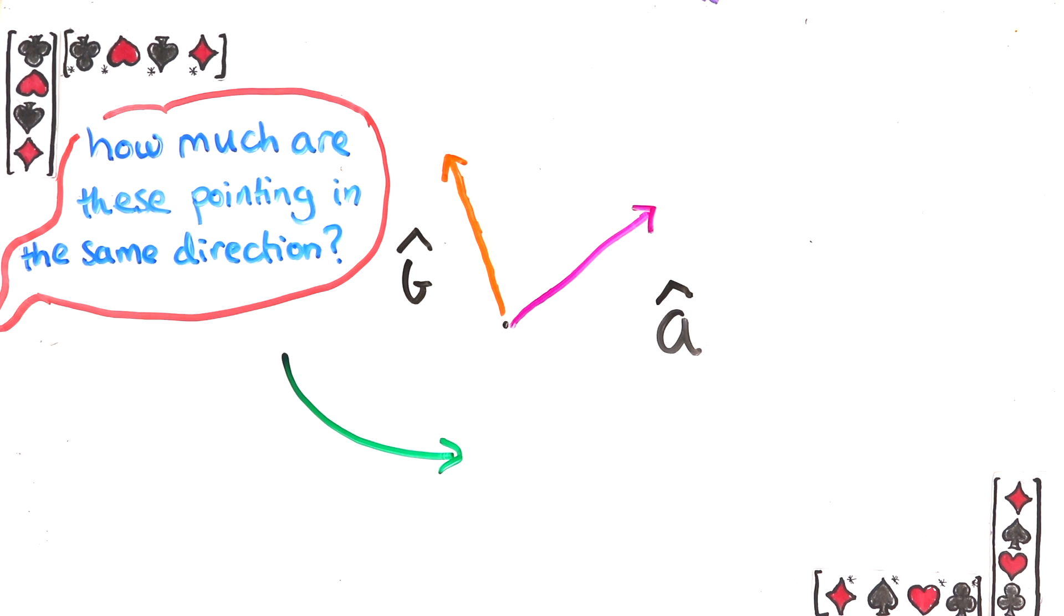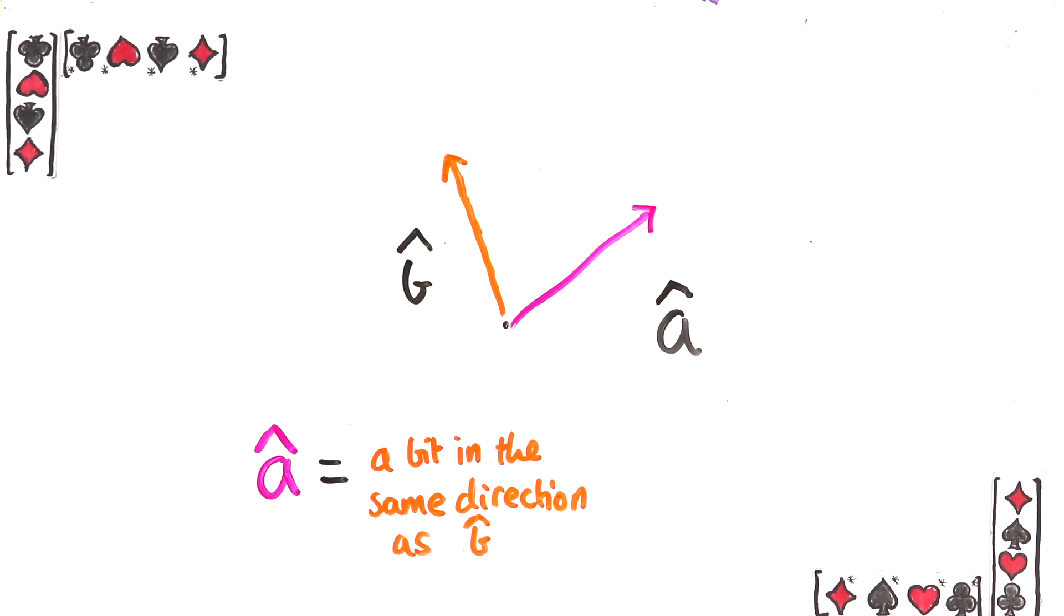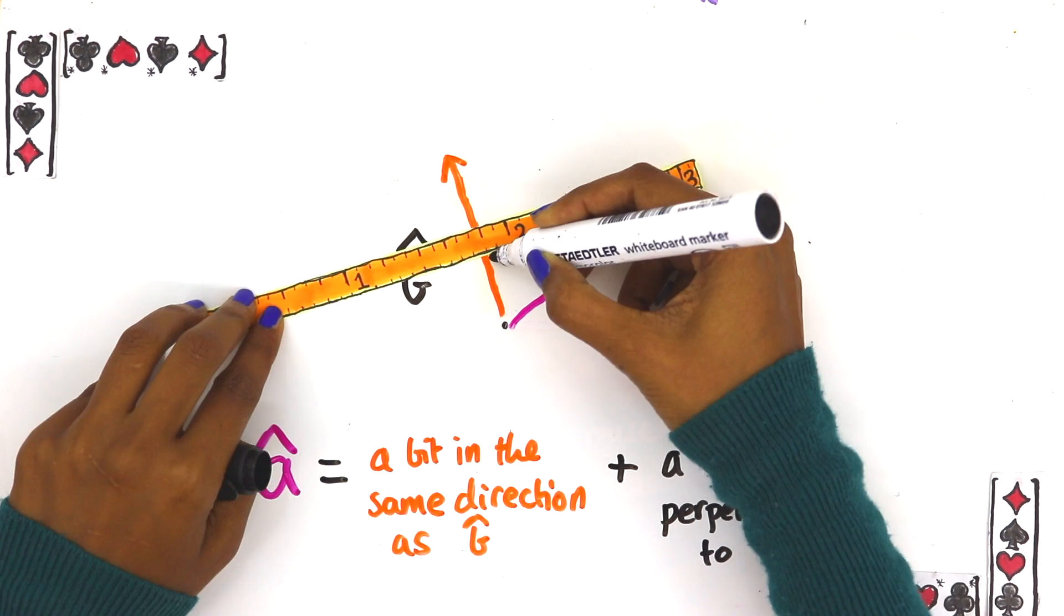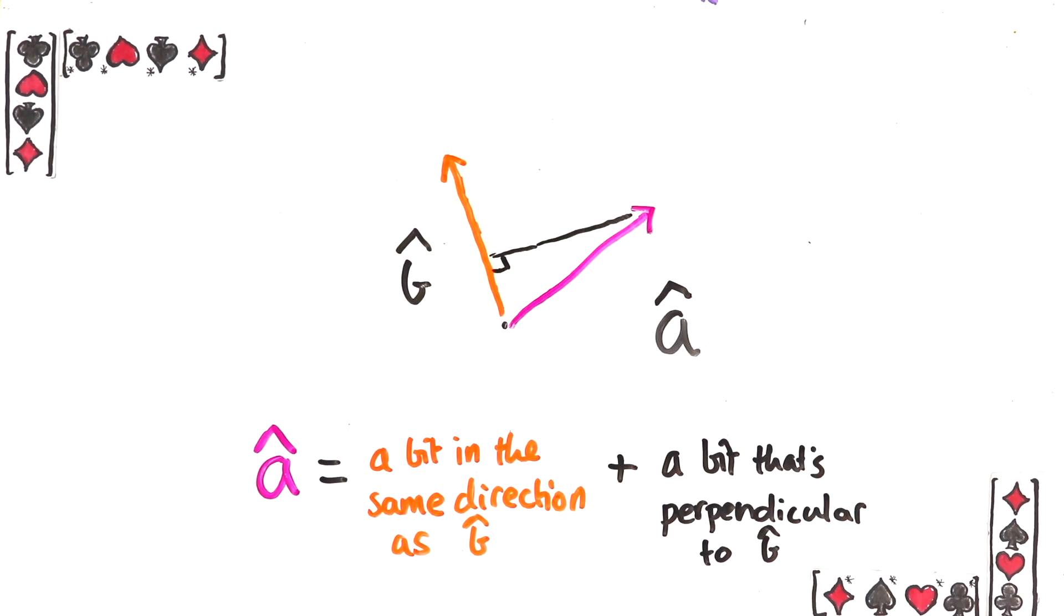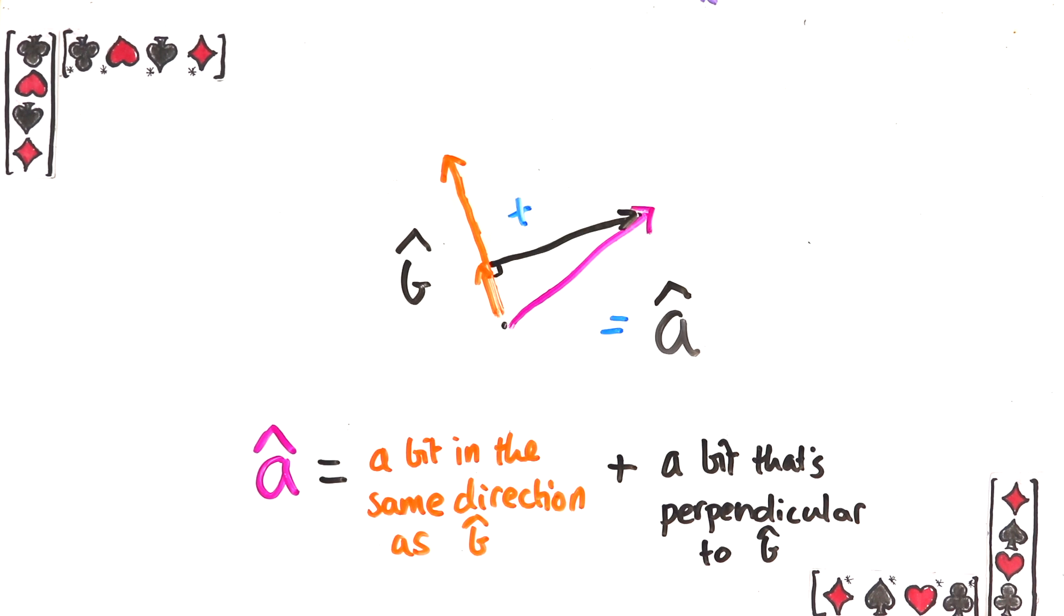A good way to interpret this question is how much does one of these vectors overlap with the other? What I mean is this. You can always write that a hat is equal to some part in the direction of b hat plus a bit that's completely perpendicular to the direction of b. Why? Draw a little triangle like this and then have these two sides be vectors. They add up to the vector a hat.